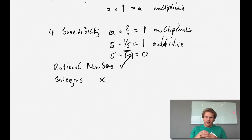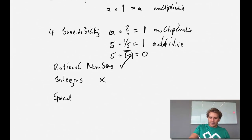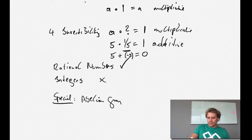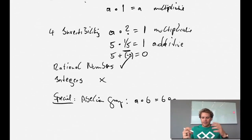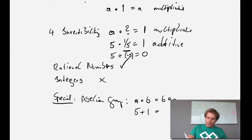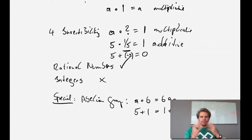There's a special form called an abelian group, which simply means that the group operation is commutative: A operation B equals B operation A. For example, 5 + 1 equals 1 + 5.